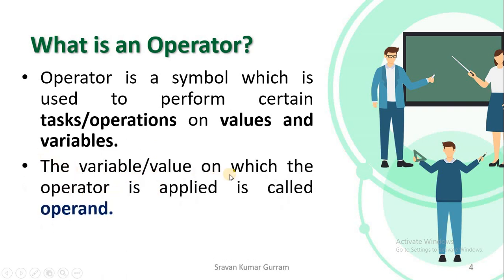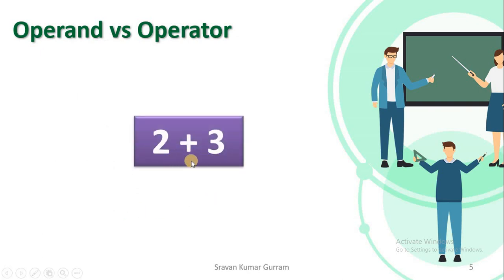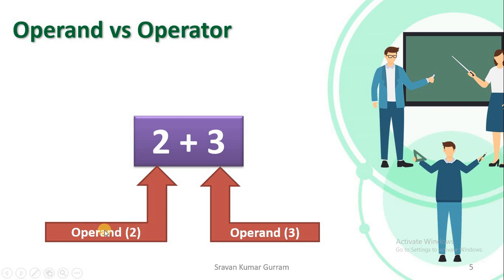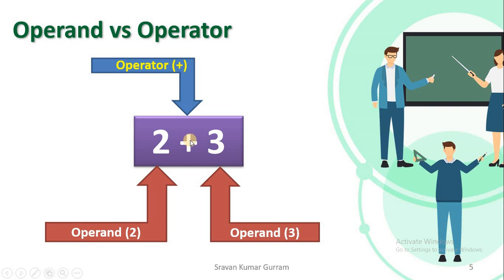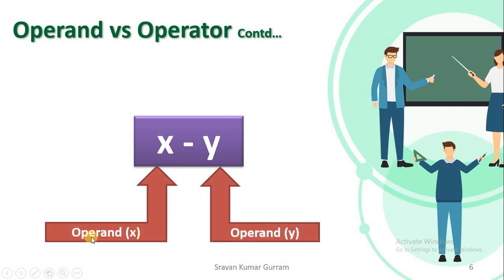The variable or value on which the operator is applied is called an operand. For better understanding, take the expression 2 plus 3. In this, 2 and 3 are called operands — 2 is one operand and 3 is another operand. The plus symbol we are using to implement the operation is called an operator. Take one more example: if we write x minus y, then x and y are called operands and the symbol minus is called the operator.